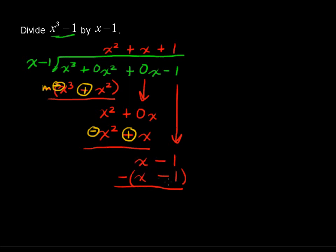x minus 1 minus x minus 1 is 0. So our quotient, let's get a nice blue color. Our quotient is x squared plus x plus 1.